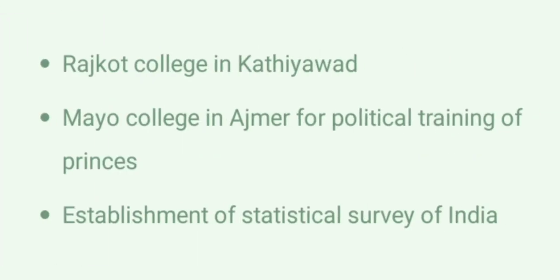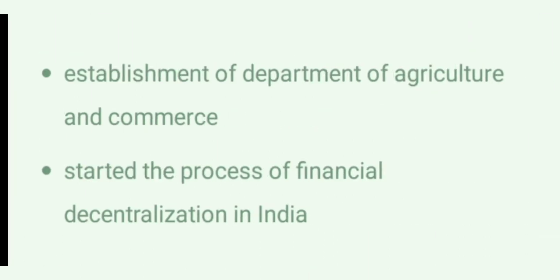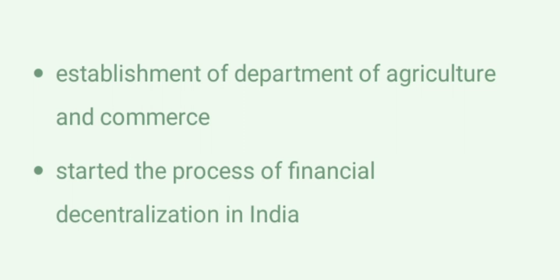Lord Mayo, 1869 to 1872. Rajkot College at Kathiawar. Mayo College in Ajmer for political training of princes. Establishment of Statistical Survey of India. Establishment of Department of Agriculture and Commerce. Started the process of financial decentralization in India.